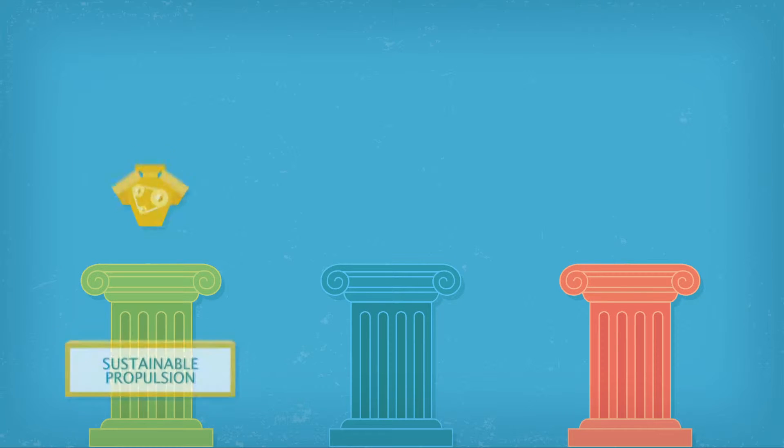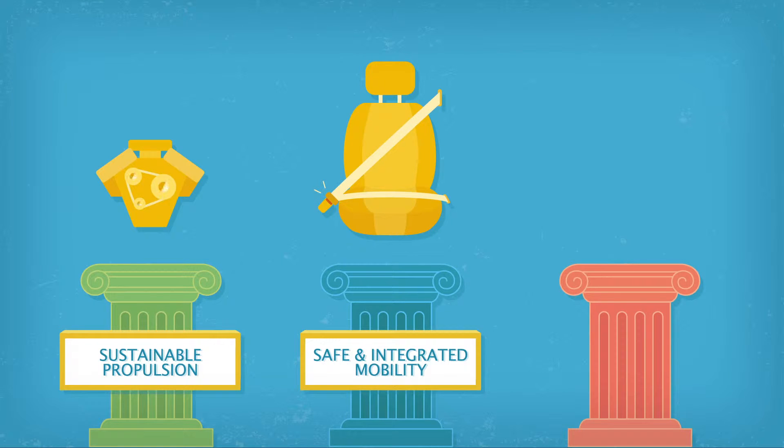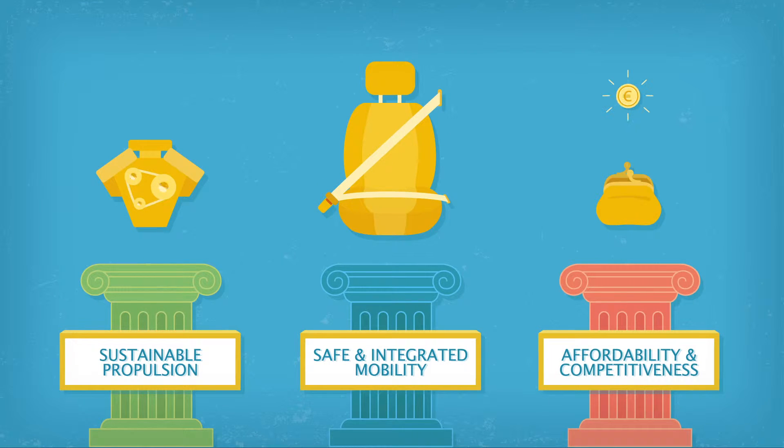UCAR's strategic pillars address the challenges of customers, society, and our industry: sustainable propulsion, safe and integrated mobility, and affordability and competitiveness for both passenger and commercial vehicles.